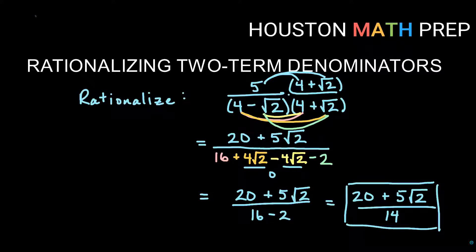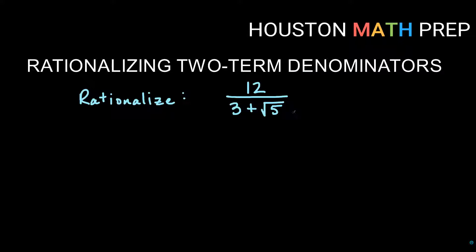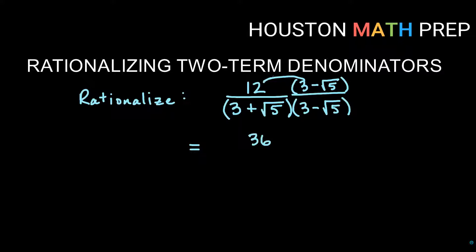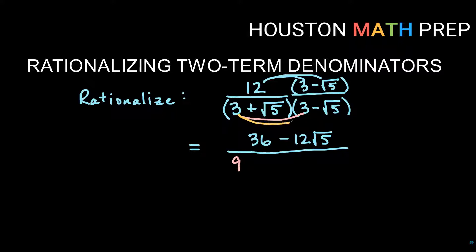We'll do a couple more. For our next one, we're going to rationalize 12 over three plus root five. The conjugate of three plus root five is three minus root five — same terms, different operation in between; add becomes subtract. So on the top we also multiply by three minus root five. On the top: 12 times three is 36, and 12 times negative root five gives us negative 12 root five. On the bottom, three times three gives us nine. Taking the outside terms: three times negative root five gives us negative three root five.